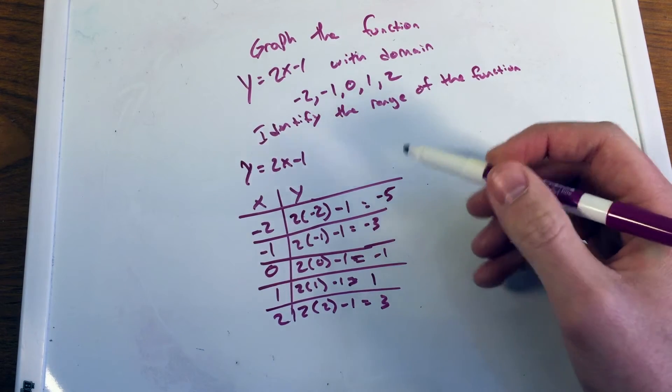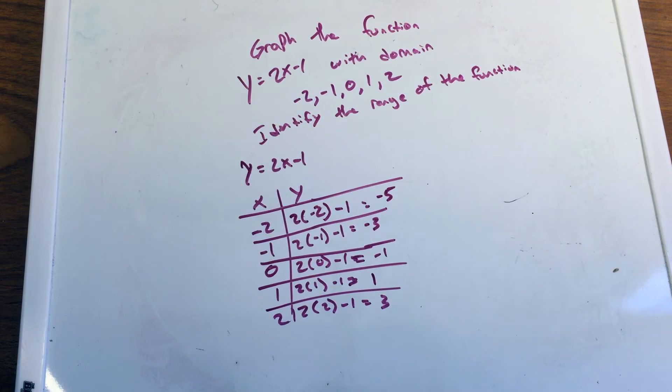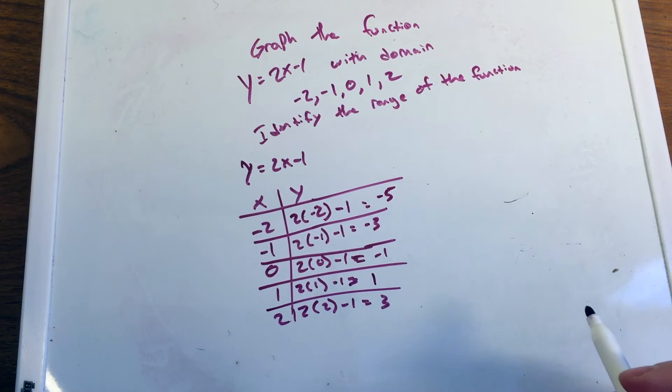You'll notice a pattern here between negative 5, negative 3, negative 1, 2, 3. All of them go up by a value of 2. That's something to note, and we'll get to that later, exactly what that means in a different video.